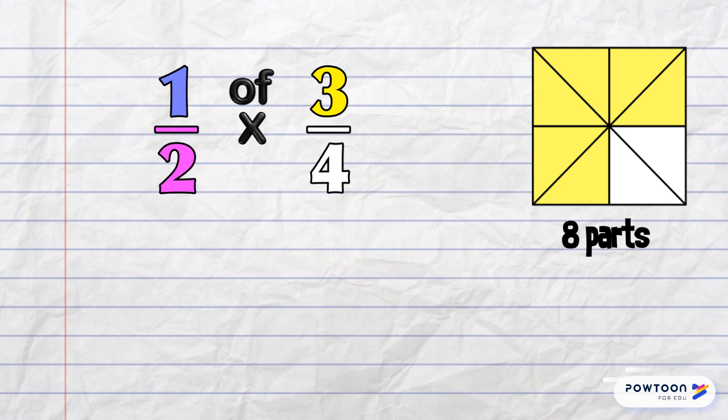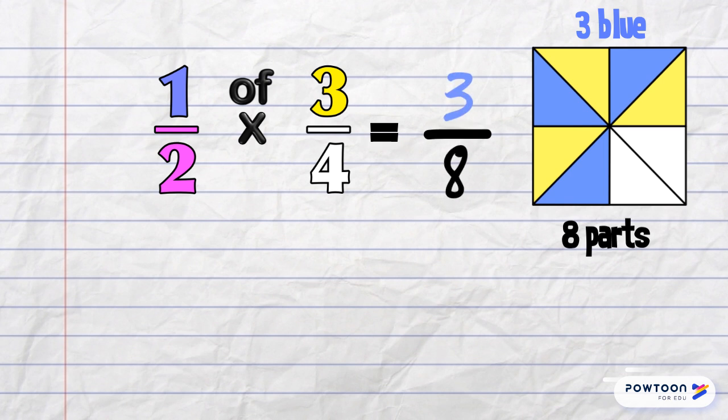We need to show half of 3 quarters, so I'm going to color half of each of those yellow quarters we started with in blue. And we get 3 blue parts out of 8 parts in the whole now. The answer is 3 eighths.